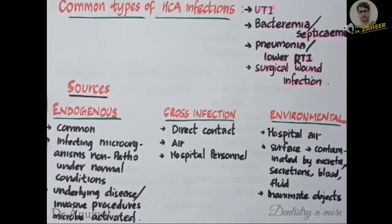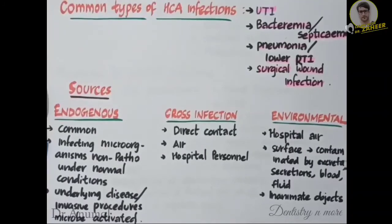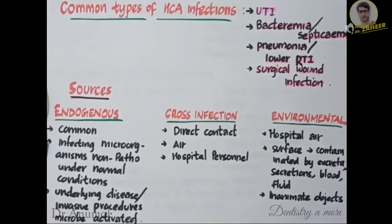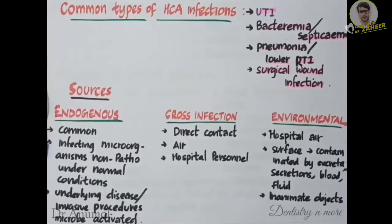Moving on to the sources of healthcare-associated infection — mainly three sources: endogenous sources, cross infection, and environmental sources. Endogenous sources are the most common type. The infective microorganisms will be non-pathogenic under normal conditions; however, when there is an underlying disease or when the patient is undergoing any invasive diagnostic and therapeutic procedures, the microbe will get activated — they will reproduce, spread, localize, and infect the patient.